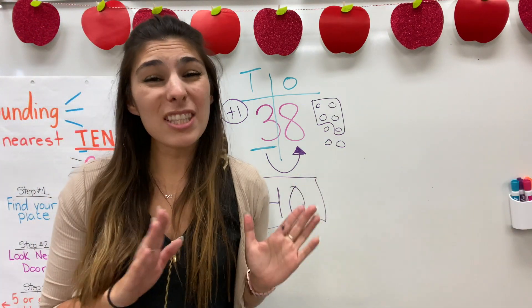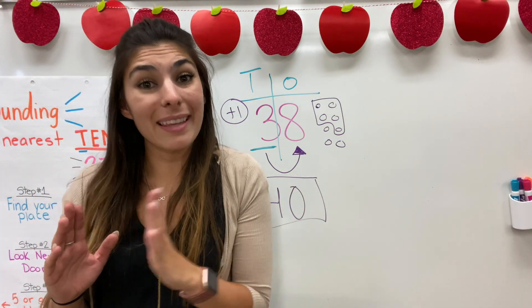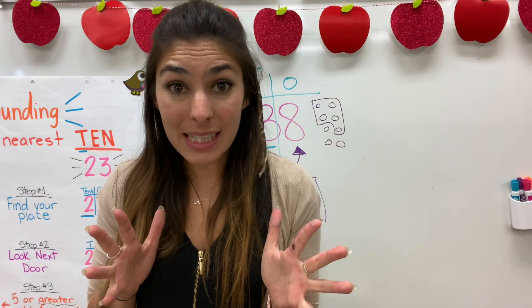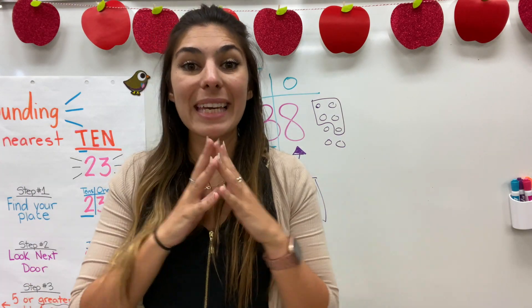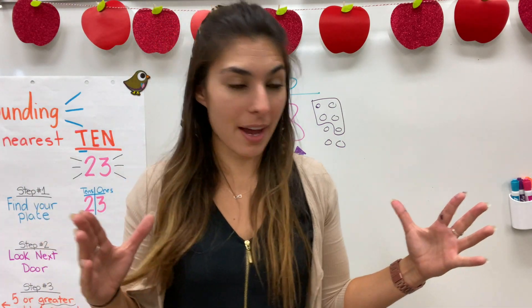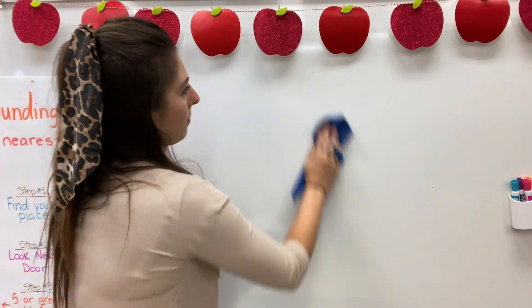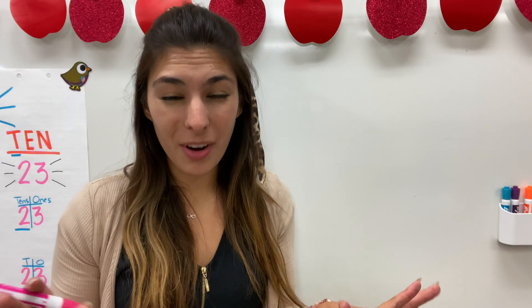And then that ones digit is going to turn to zero — we round 38 to 40, also because it's closer to 40 than it is to 30. We can really see this by making a number line.